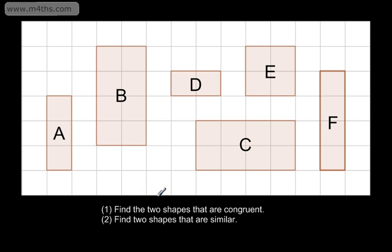In question one, we're asked to find the two shapes that are congruent, and in question two, we're asked to find two shapes that are similar. Let's define these terms. If two shapes are said to be congruent, they are identical — the same shape and the same size. If two shapes are said to be similar, they are the same shape but possibly different sizes, so they have the same proportions.